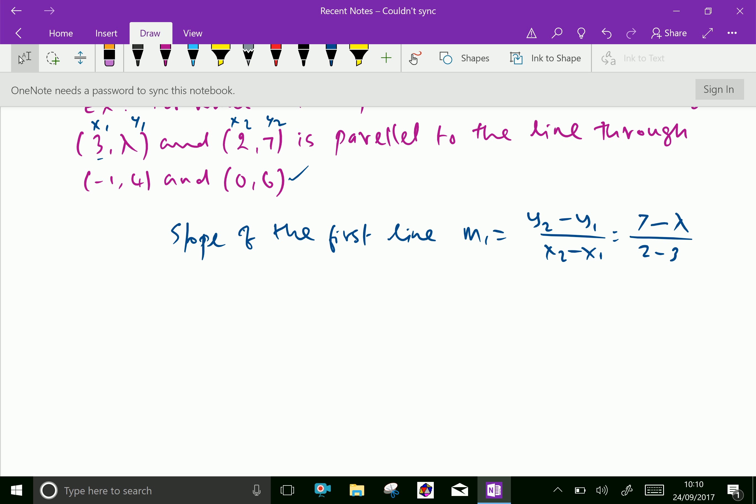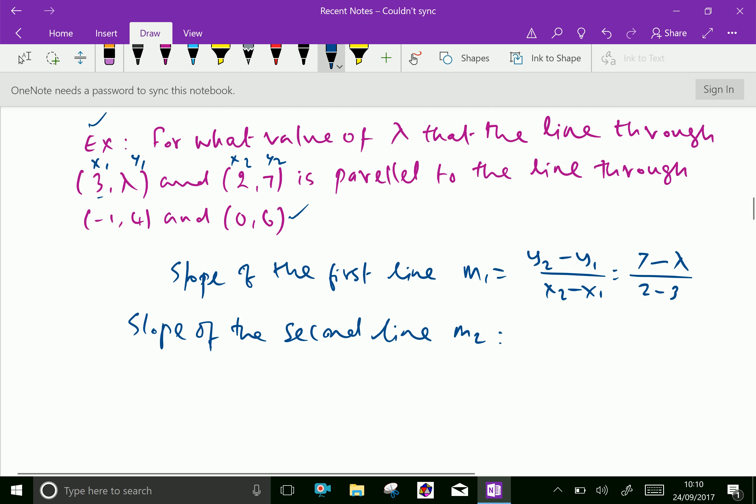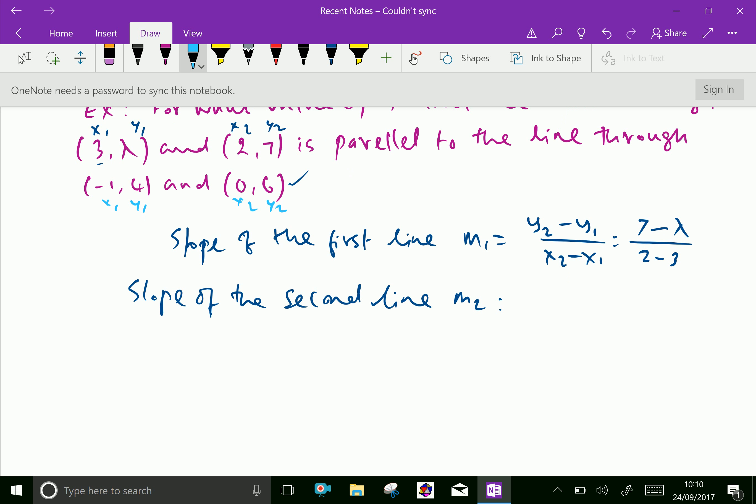Slope of the second line m2 equals y2 minus y1 over x2 minus x1. This is x1, y1 and x2, y2, so m2 equals 6 minus 4 over 0 minus (-1), which equals 2 over 1, equals 2.